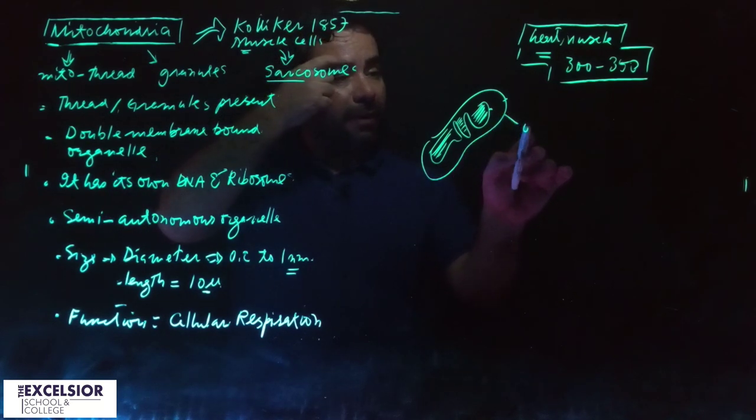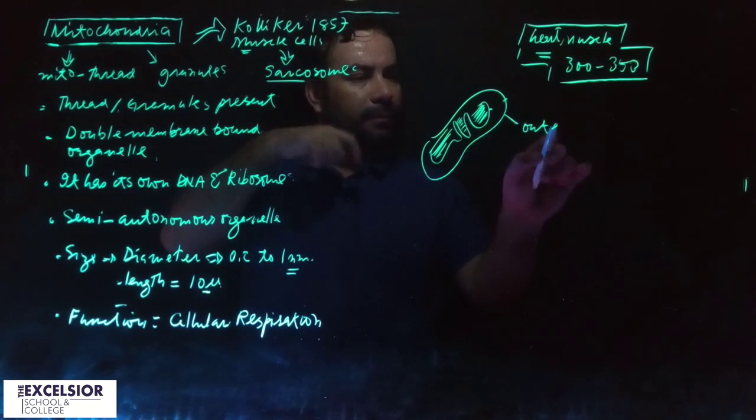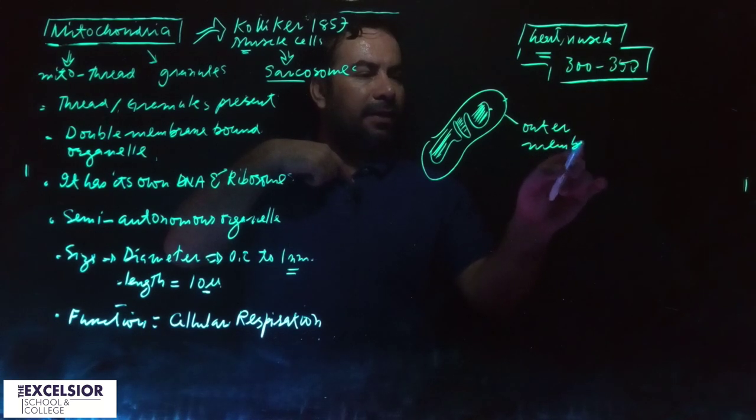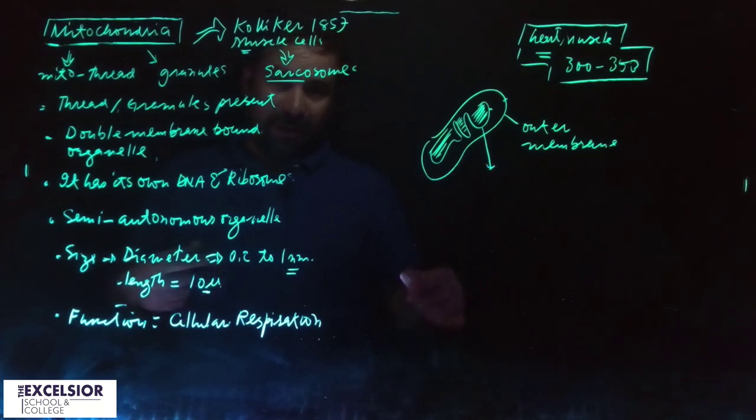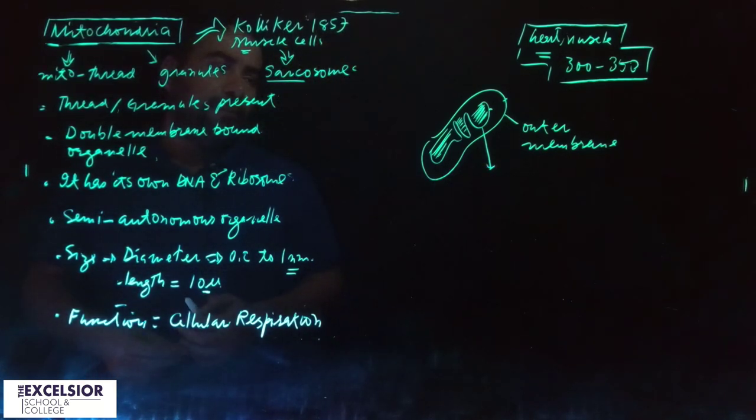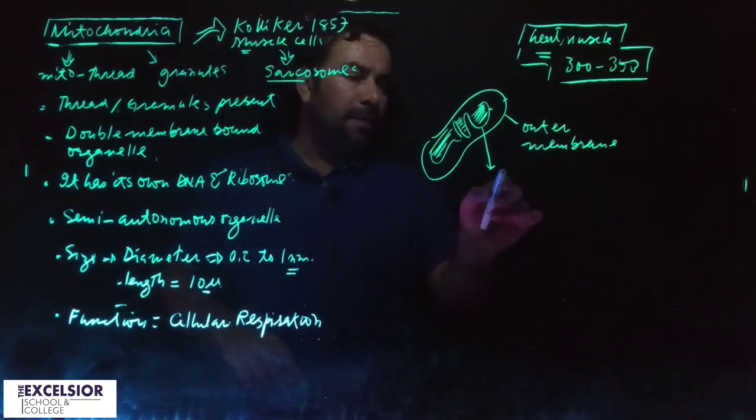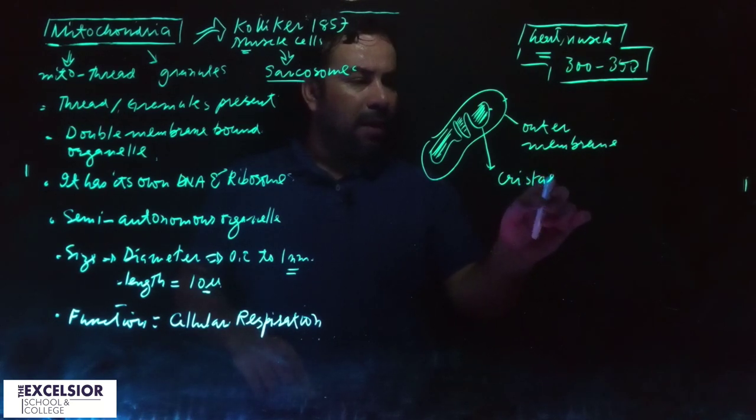The inner membrane has a particular name because it has to perform a lot of important functions in the cellular respiration that we talked about. This membrane has a name - that's called cristae.